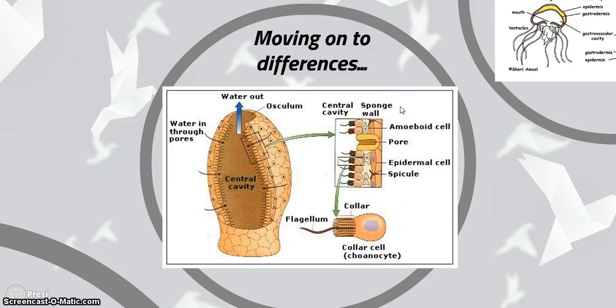They are sessile, which means that they don't move, and they pump in water through these pores, filtering tiny organisms in to obtain food. Sponges are among the structurally simplest multicellular organisms.